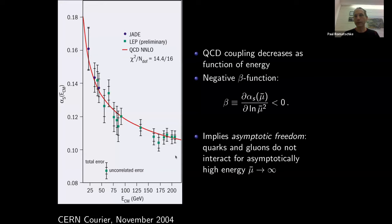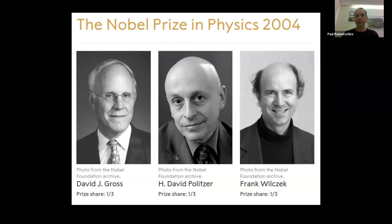In the very high energy limit, at the far right of this plot, the coupling constant essentially goes to zero — asymptotically small — which implies that quarks and gluons, the building blocks in the QCD Lagrangian, become non-interacting at very high energy, i.e., asymptotically free. The finding of asymptotic freedom was cited for the Nobel Prize in 2004, shared by David Gross, David Politzer, and Frank Wilczek.